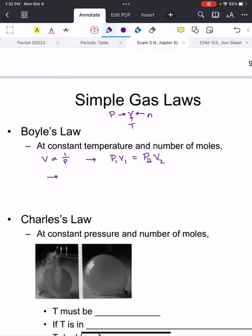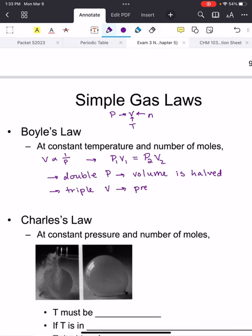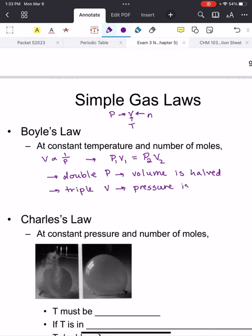So what that means is if you double your pressure, then your volume goes down by half and vice versa. Let's say you triple your volume. If you triple your volume, then the pressure is now a third of what it is originally. And so these are inversely related to each other. As one goes up, the other goes down by the same factor.